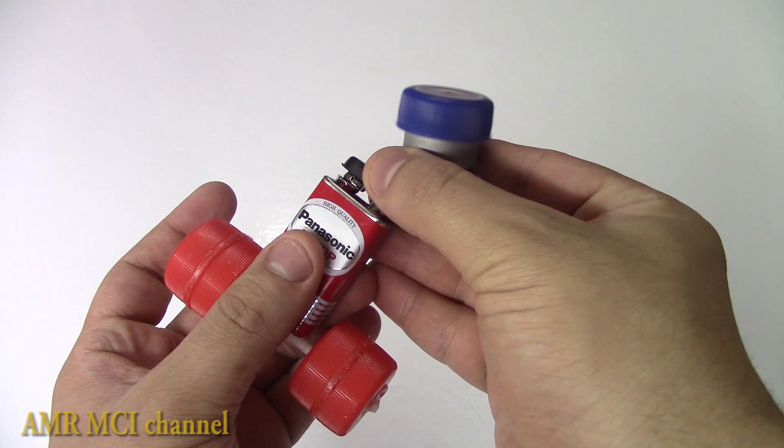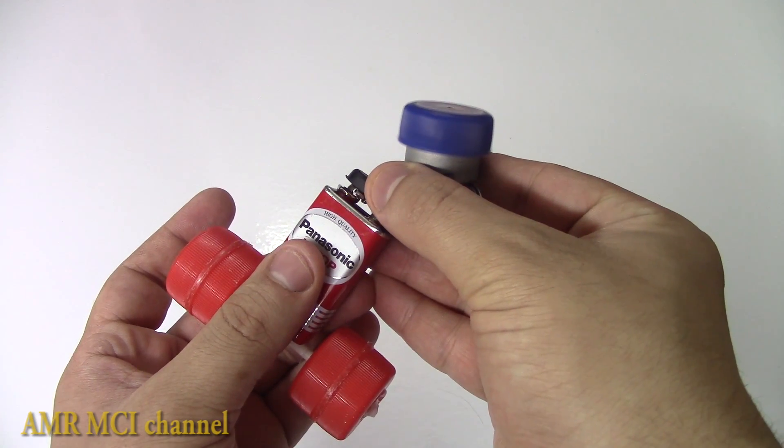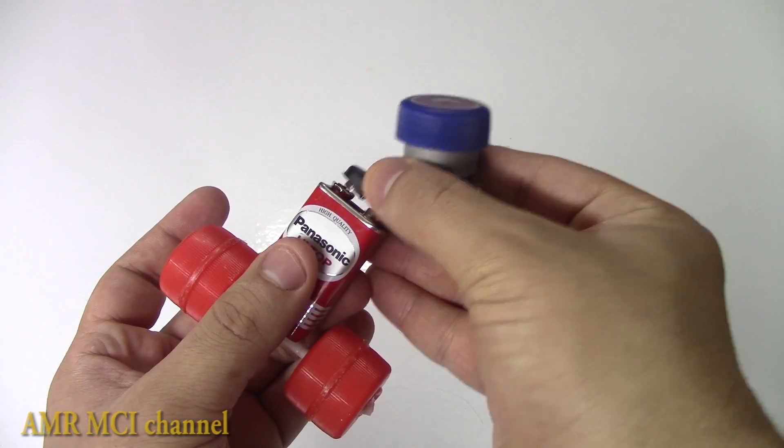Now if you connect the motor to the battery, the axle starts rotating, forming the engine of the motorcycle.